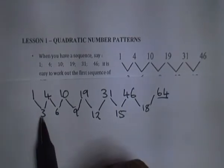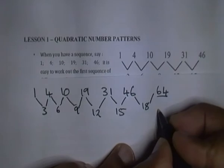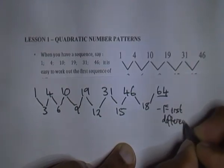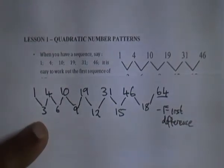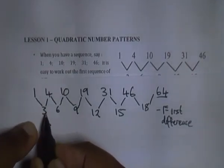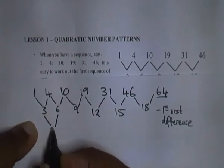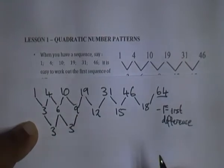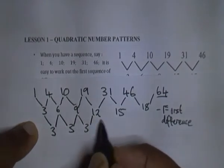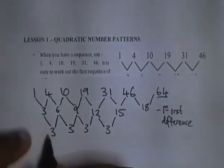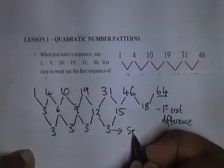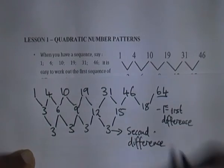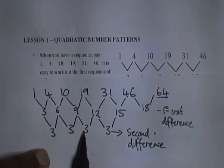What we have here is what is called the first difference. Now if we check what is the difference between 3 and 6, we'll find that it's 3. 6 to 9 is 3, 9 to 12 is 3. So this is what we call the second difference. The second difference is the one that's constant.